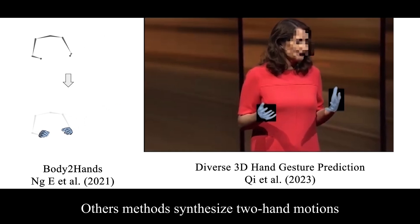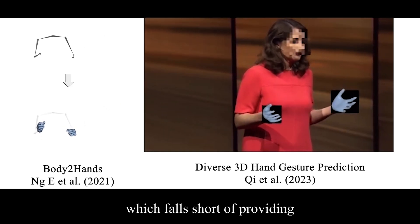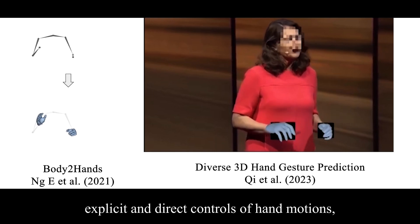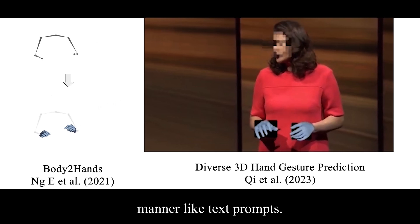Other methods synthesize two-hand motions with body motion as conditions, which falls short of providing explicit and direct controls of hand motions, especially in a human-interpretable manner like text prompts.